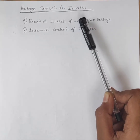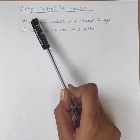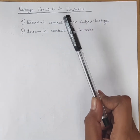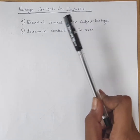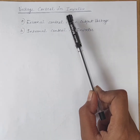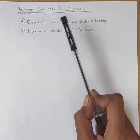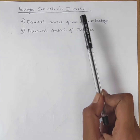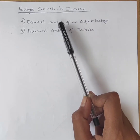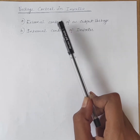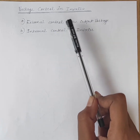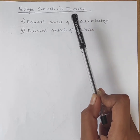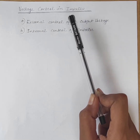Hello students. Today's topic of discussion is voltage controlling inverters. We know that an inverter is a power electronic device that converts DC to AC. AC loads may require constant or adjustable voltage at their output terminals. When such loads are fed by inverters, it is essential that the output voltage of the inverters is controlled to fulfill the requirements of AC loads.